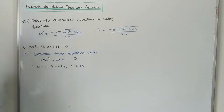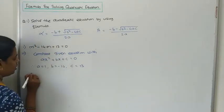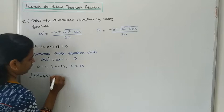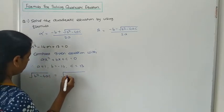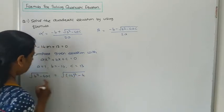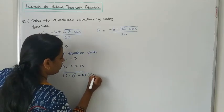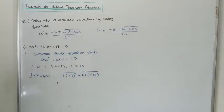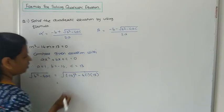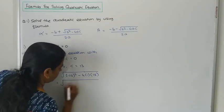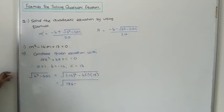Now we need to apply the formula. First, calculate √(B² - 4AC). Substituting: √((-14)² - 4·1·30) = √(196 - 120). Wait — let's compute: (-14)² = 196, and 4·1·30 = 120.